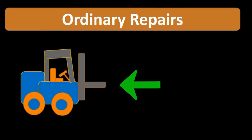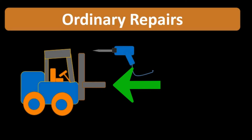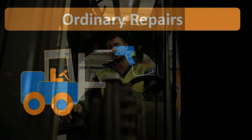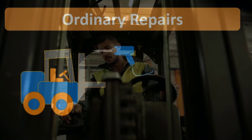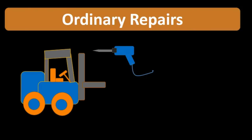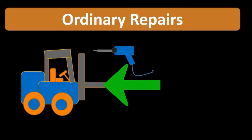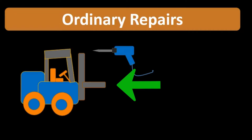For example, if we had a forklift, the ordinary repairs would be those typical repairs we would have on the forklift to keep it in operations — things like the oil change and typical maintenance on the forklift.